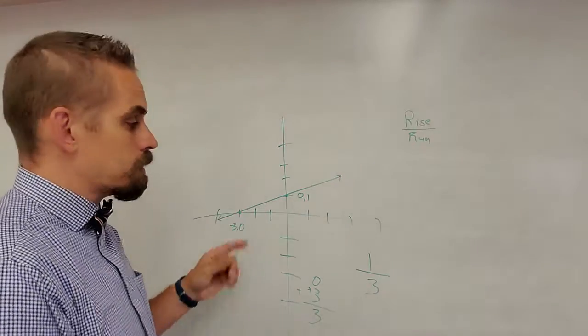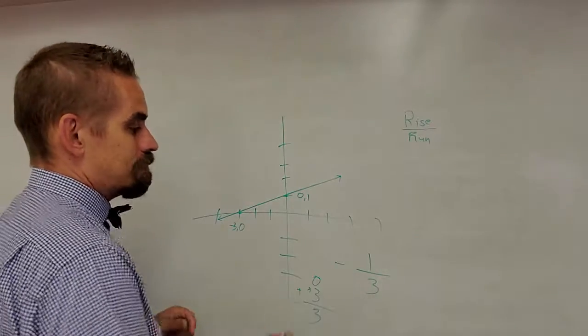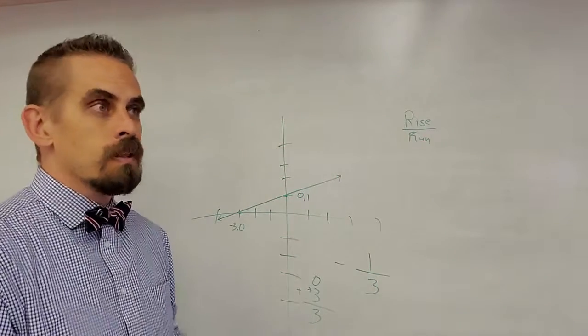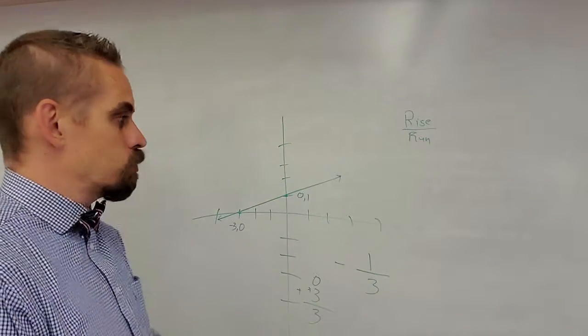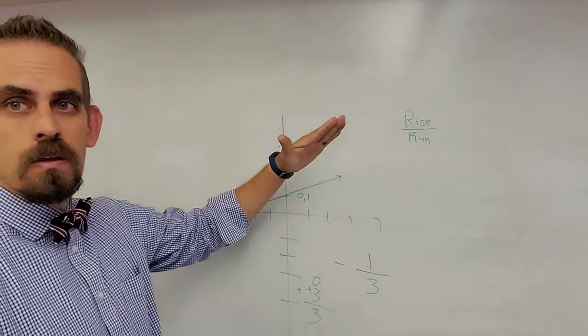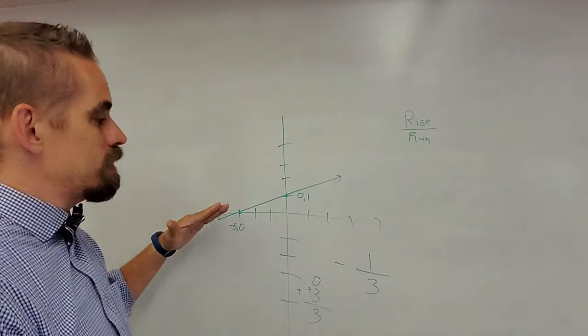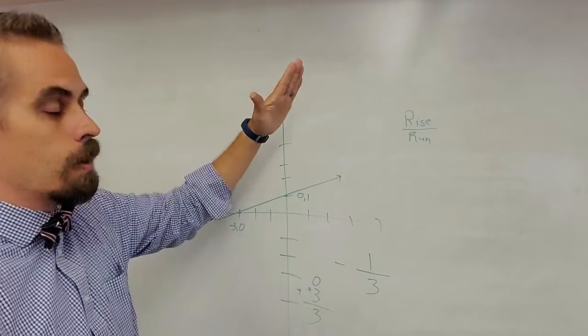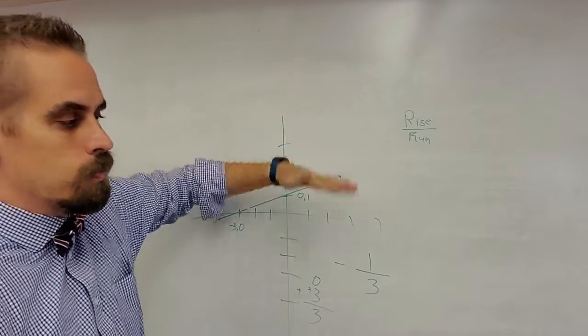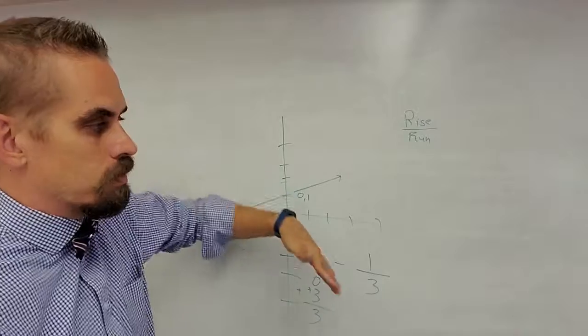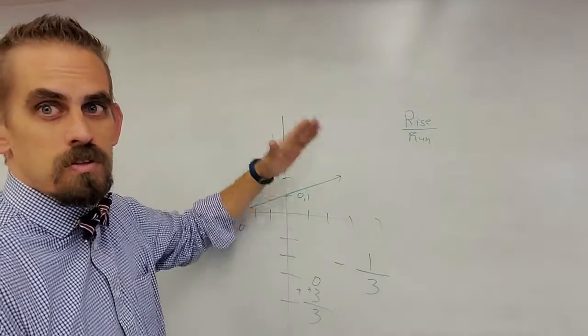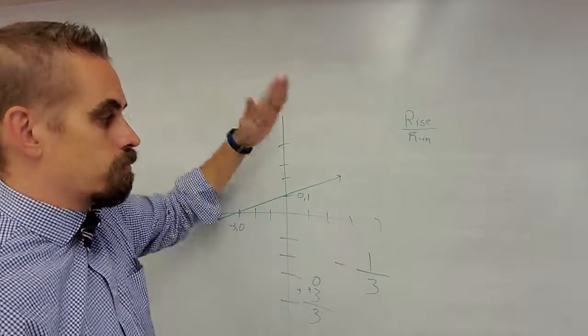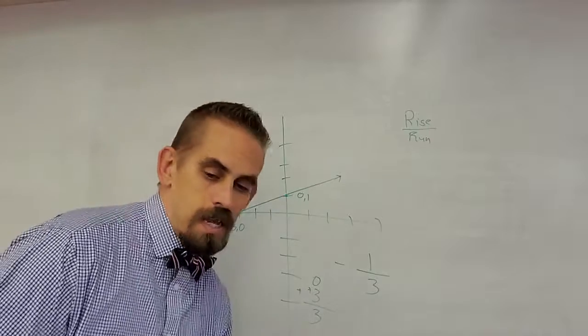Sometimes slope can be positive, and sometimes it can be negative. So how do you know the difference? An easy way that I remember it is when you're going uphill, you're going positive. So any line that you see going up this way from left to right, it's going to be positive. Any slope that you see going down here from left to right, that's going to be negative. For example,